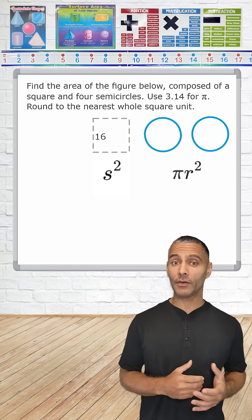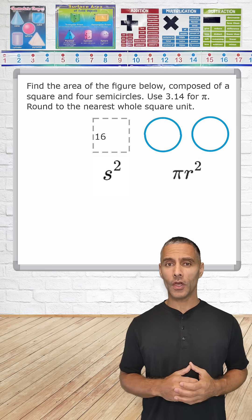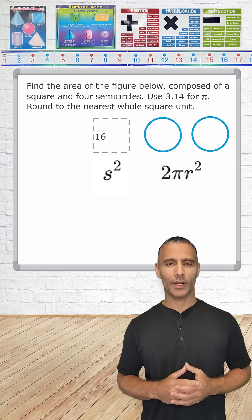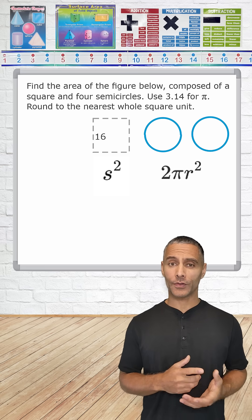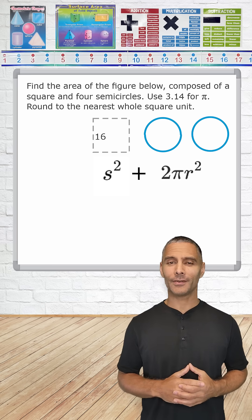Now, because we're dealing with a pair of congruent circles, we must adjust our formula to find the area of two circles, which is two times pi r squared. After finding the area of the square and the pair of congruent circles, we're going to take the resulting areas of the figures and add them together.